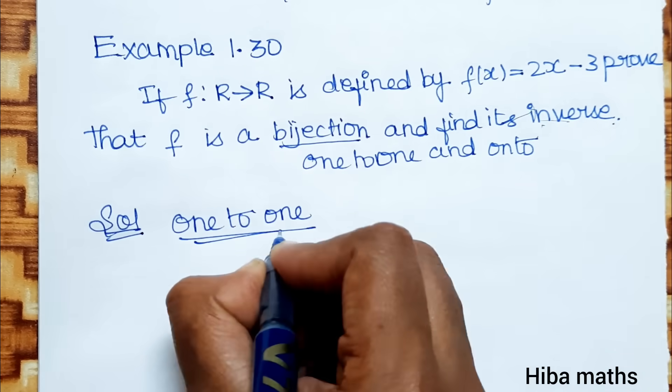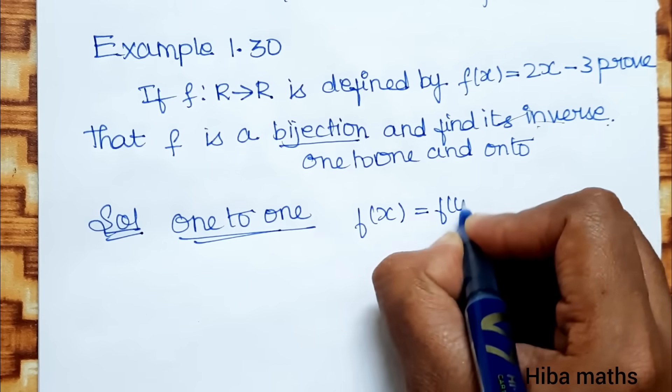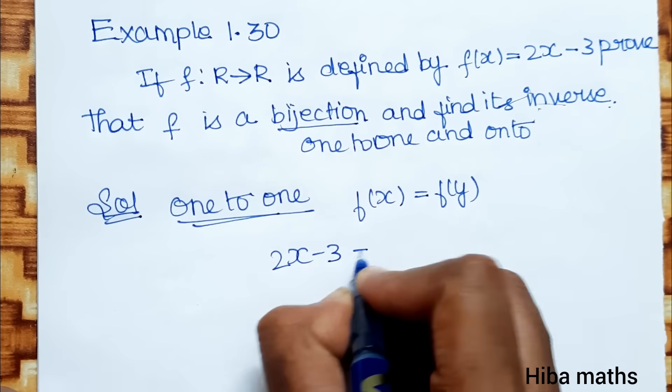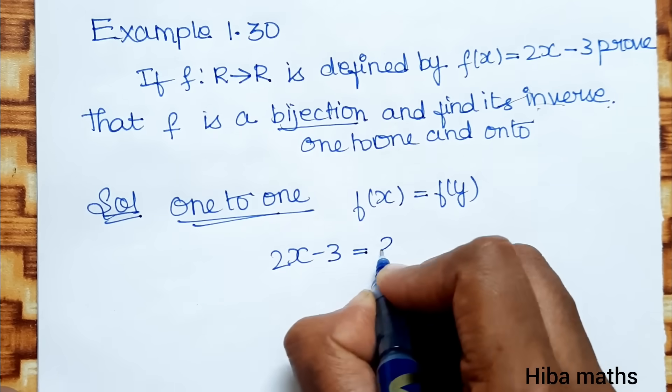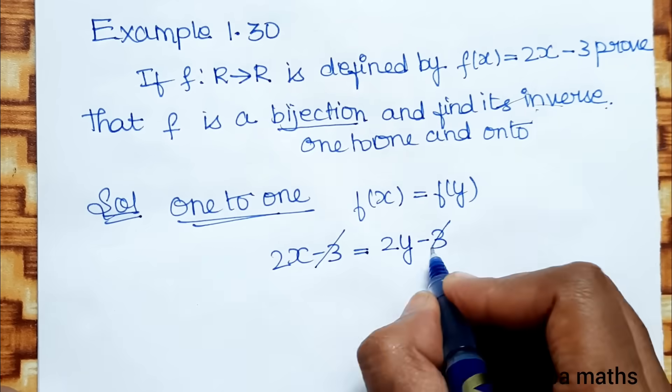Solution: To prove one-to-one, assume f(x) = f(y). f(x) = 2x - 3, that equals f(y) = 2y - 3. So 2x - 3 = 2y - 3. Then minus 3 and minus 3 cancel.